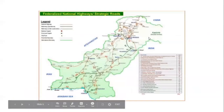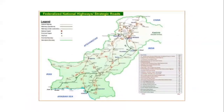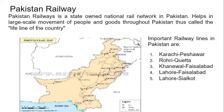This is a map overview of the roads, national highways, and strategic roads that we have in Pakistan. Pakistan Railway is a state-owned national rail network in Pakistan, similar to Pakistan International Airlines (PIA). It helps in the large-scale movement of people and goods throughout Pakistan, and is called the lifeline of the country. The reason it is called the lifeline is that it is able to transport a large number of people from one place to another, and also transport bulky items across the country.